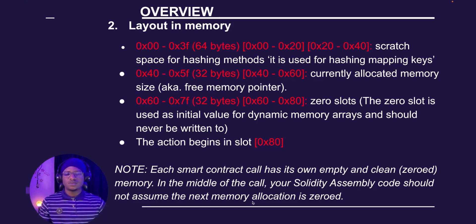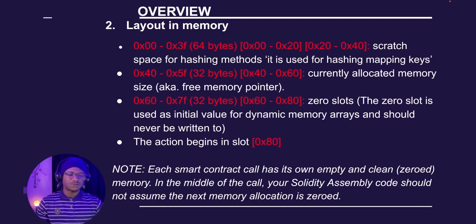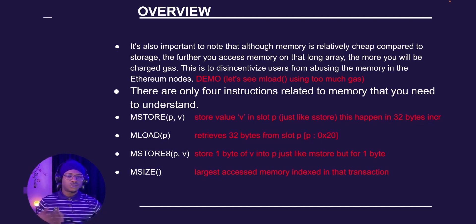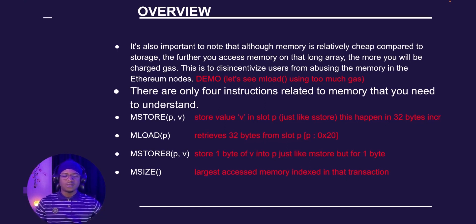Please note: each smart contract call has its own empty, zeroed memory. So in the middle of a call, your Solidity assembly code should not assume that the next memory allocation is zeroed out. Although memory is relatively cheap compared to storage, the further you access memory on a long array, the more gas you will be charged.